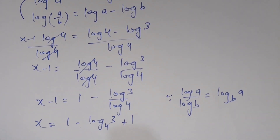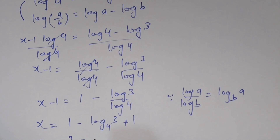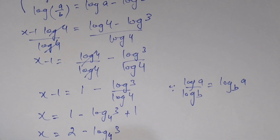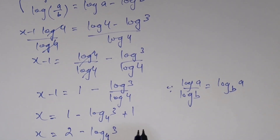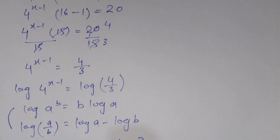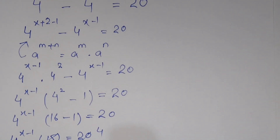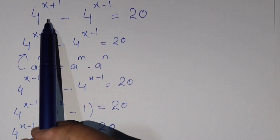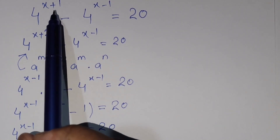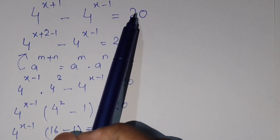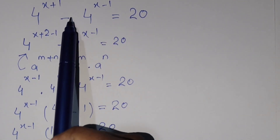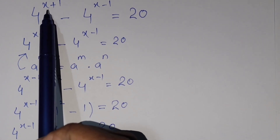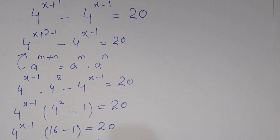So x minus 1 equals 1 minus log base 4 of 3, and bringing the minus 1 to the right gives plus 1. Therefore x equals 2 minus log base 4 of 3. If we substitute this answer back into the original equation 4^(x+1) minus 4^(x-1) equals 20, it checks out. If you need the verification, post a comment and I will add the verification in the comment box. That's all for today — thank you for watching, please subscribe to my channel.